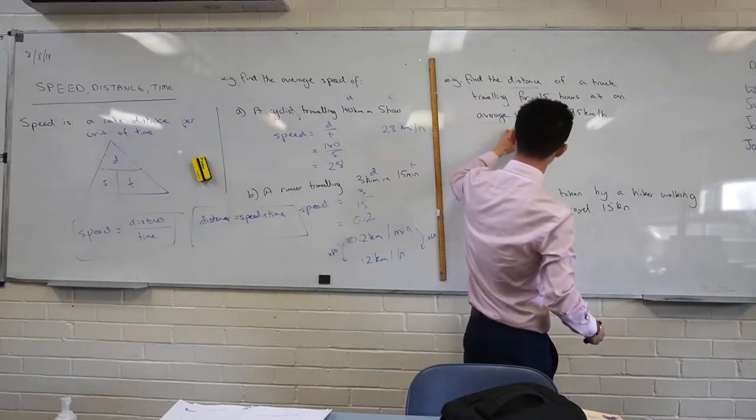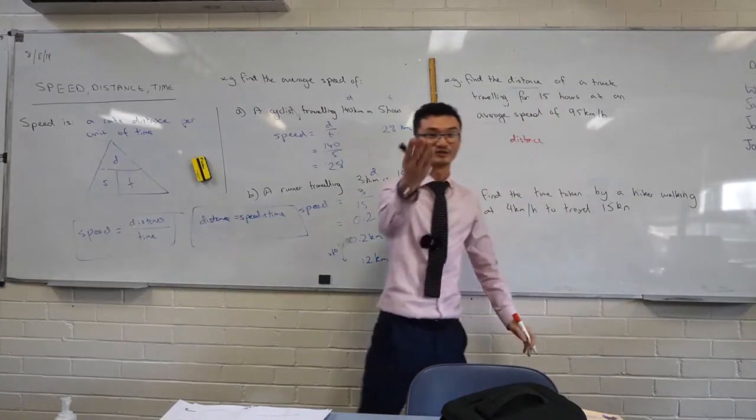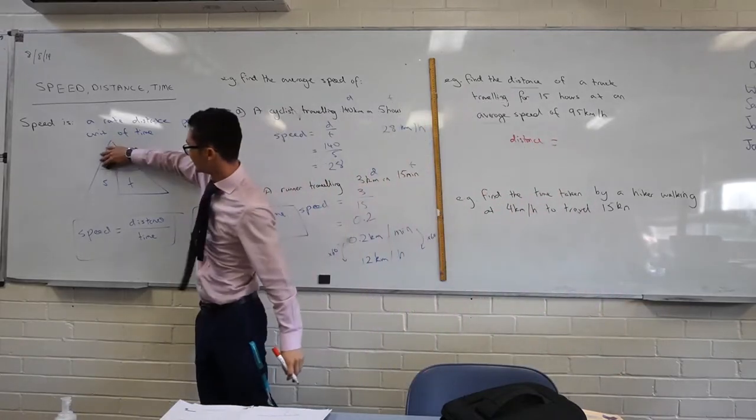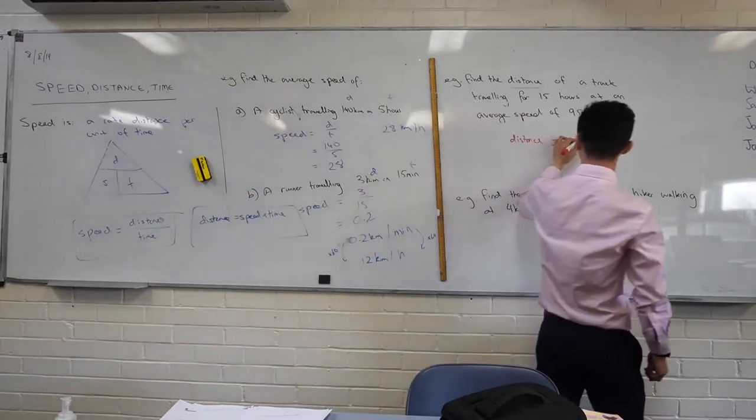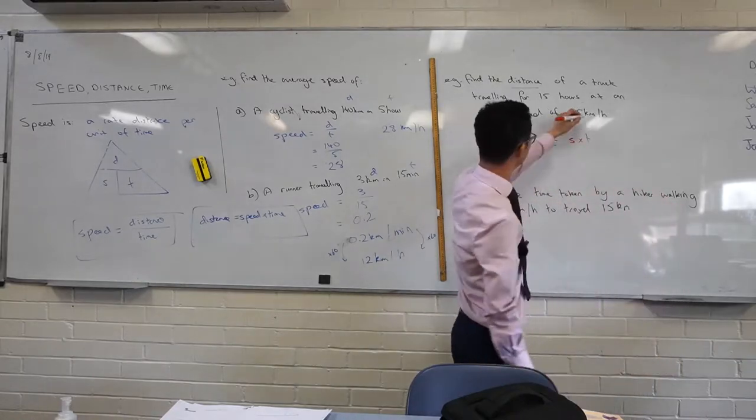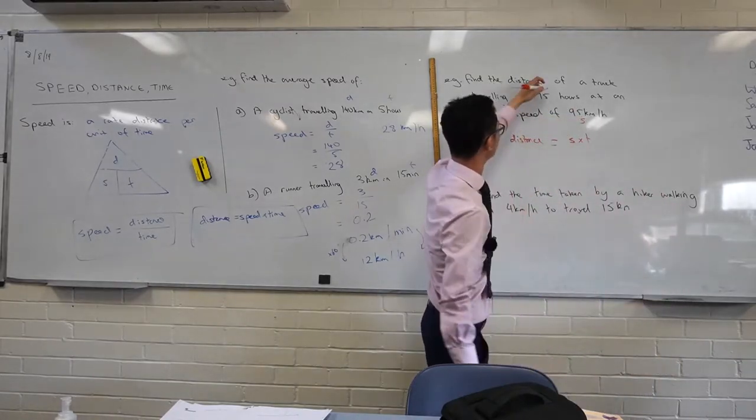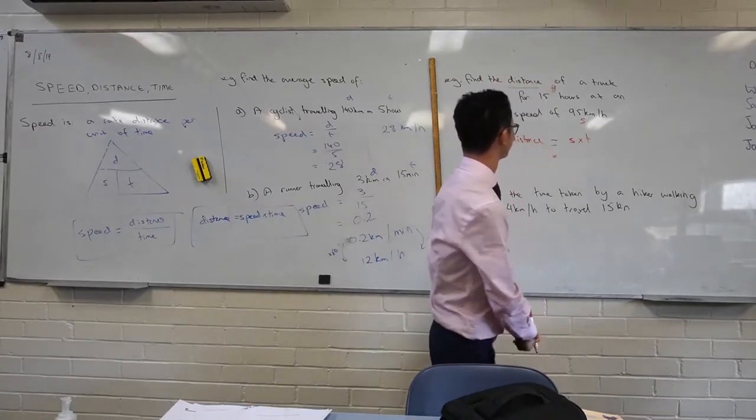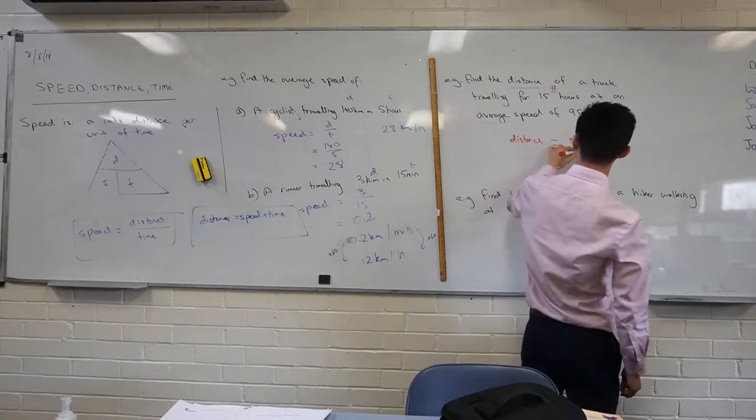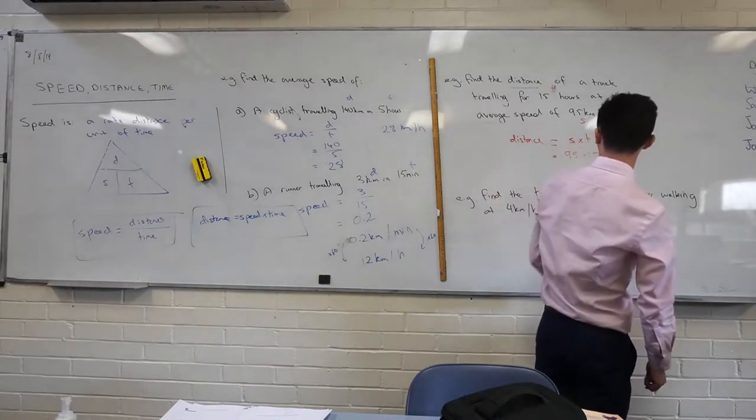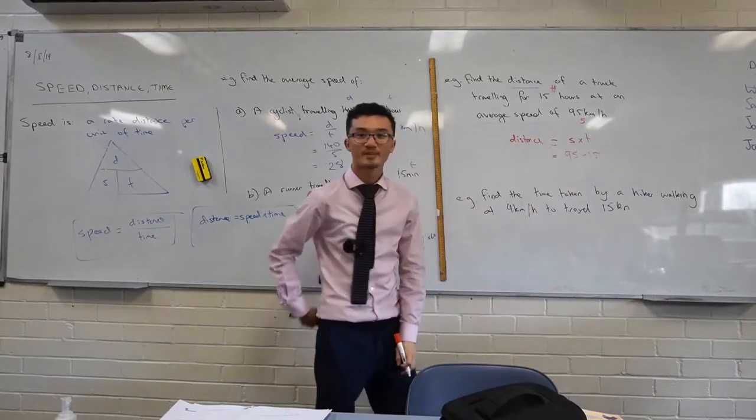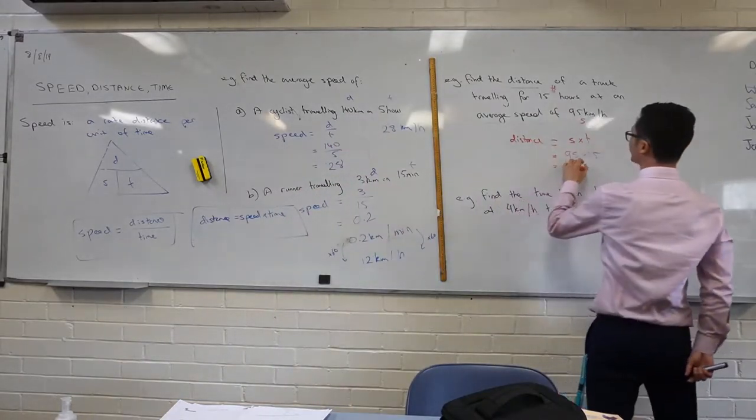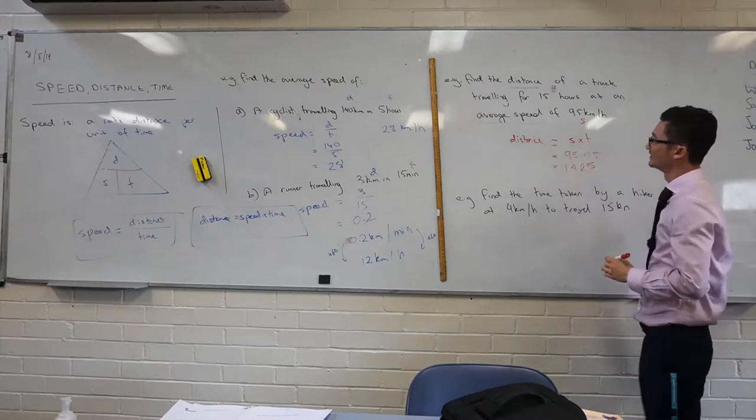The one you cover is the one you want to find out. That's exactly right. So in this case, we're covering that letter d there, and I'm doing speed times time. So that's going to be s times t. What is my speed? That's 95. How long am I doing it for? 15 hours. So let's calculate that. 95 times 15. How much is it? 1425.